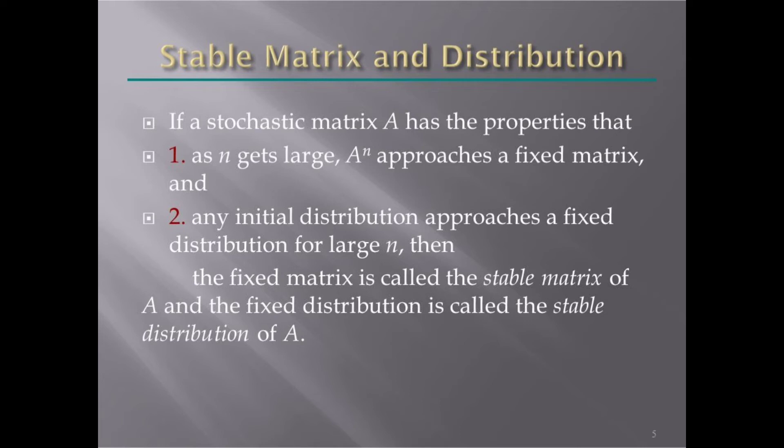Then the fixed matrix is called the stable matrix of A, and the fixed distribution is called the stable distribution of A.